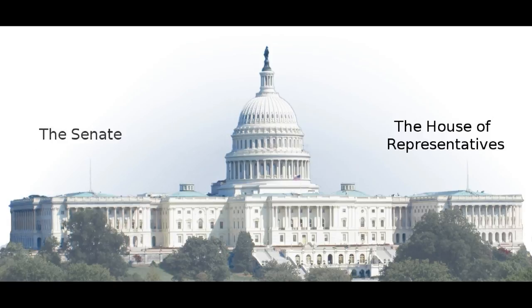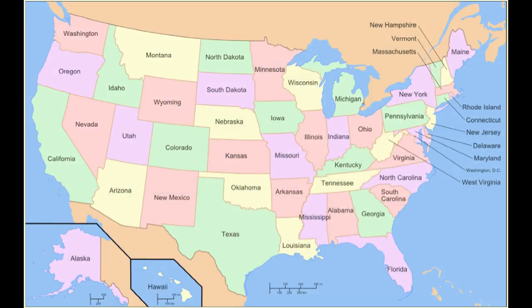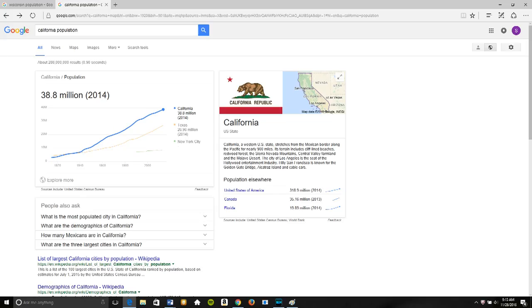Since the number of Representatives is based on population, states with larger populations will have more Representatives than smaller states. For example, California has 53 Representatives, whereas Wisconsin has eight.